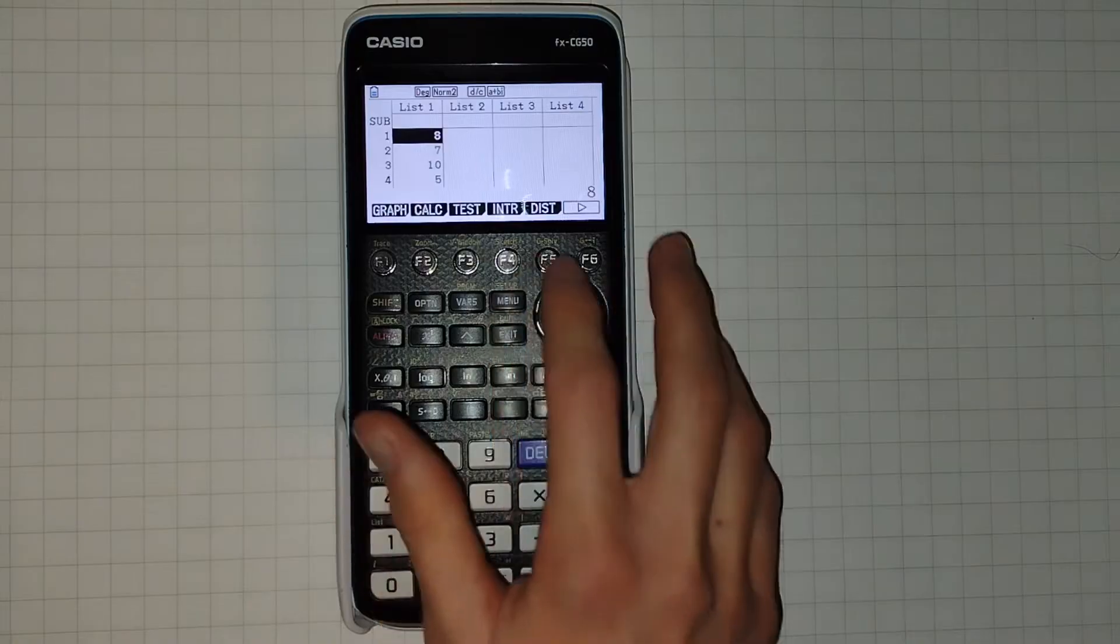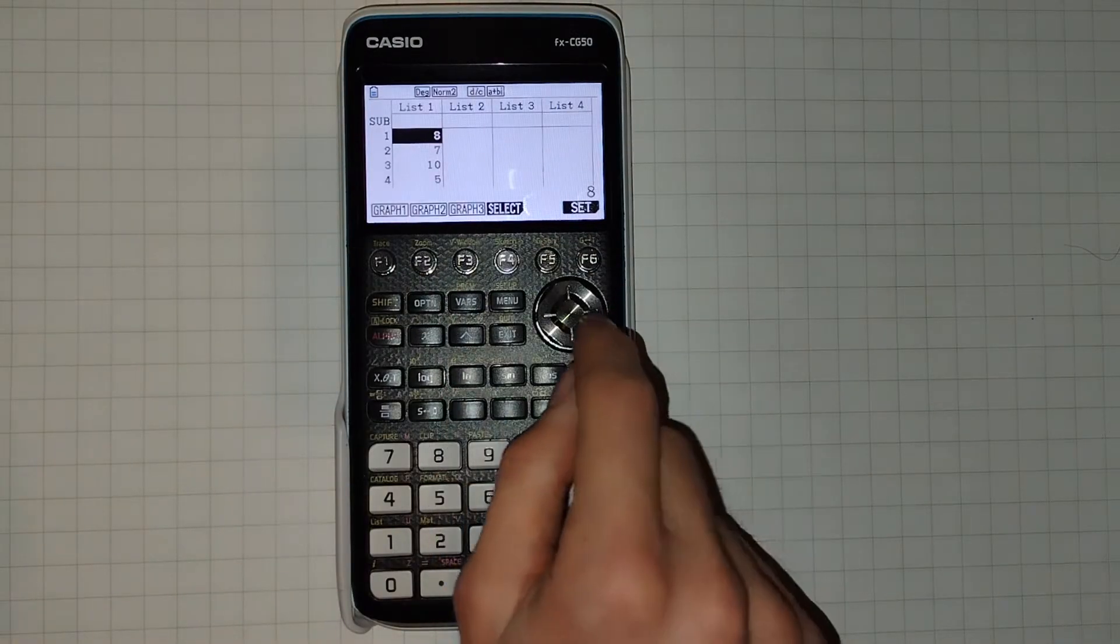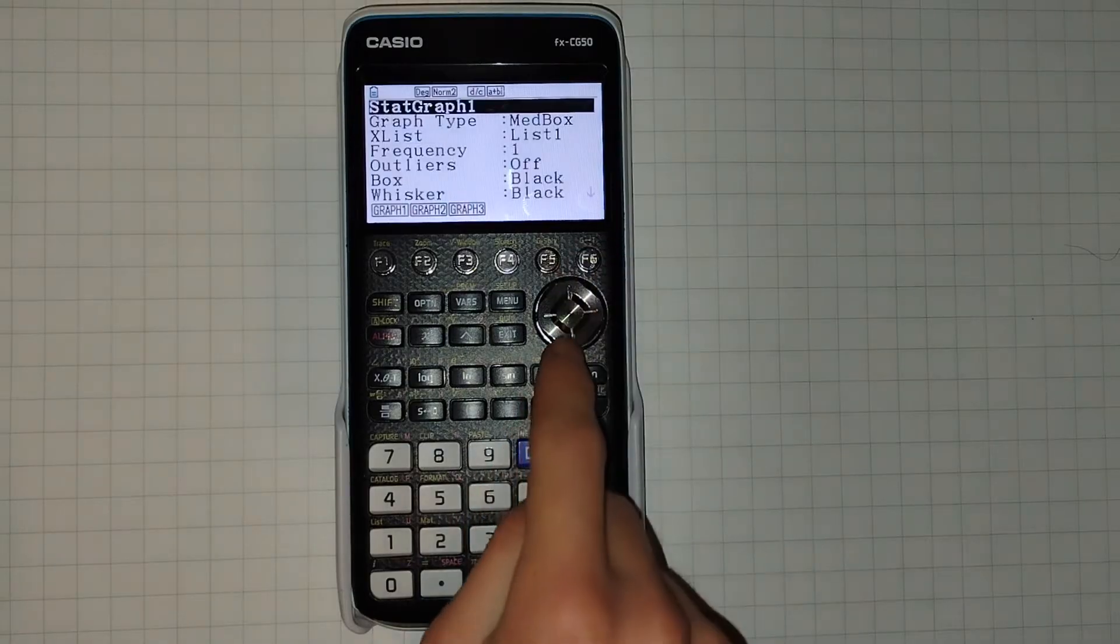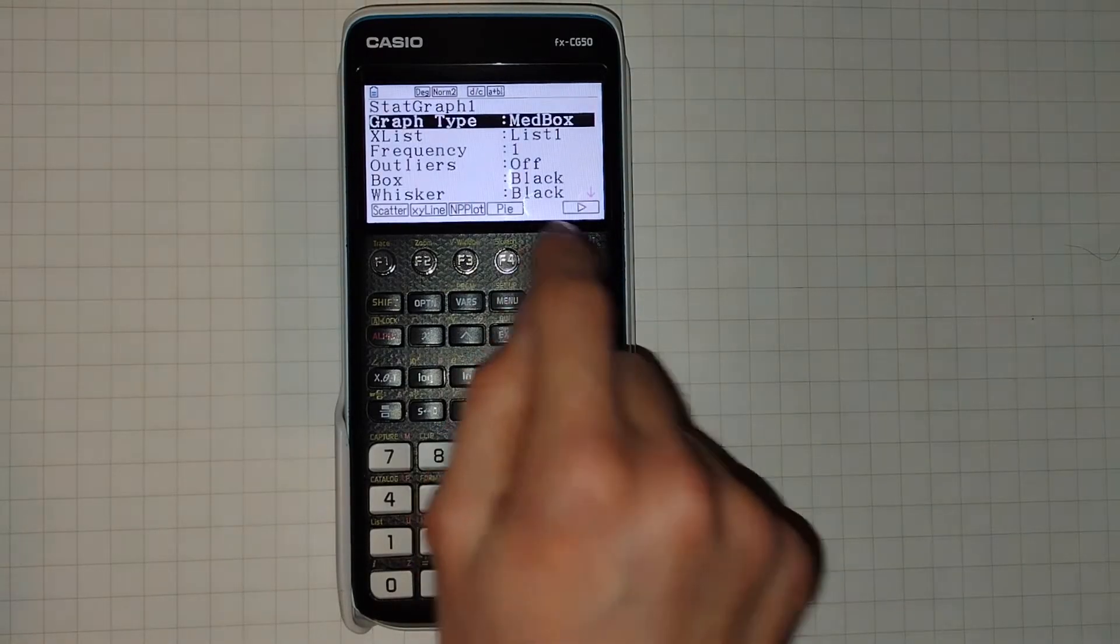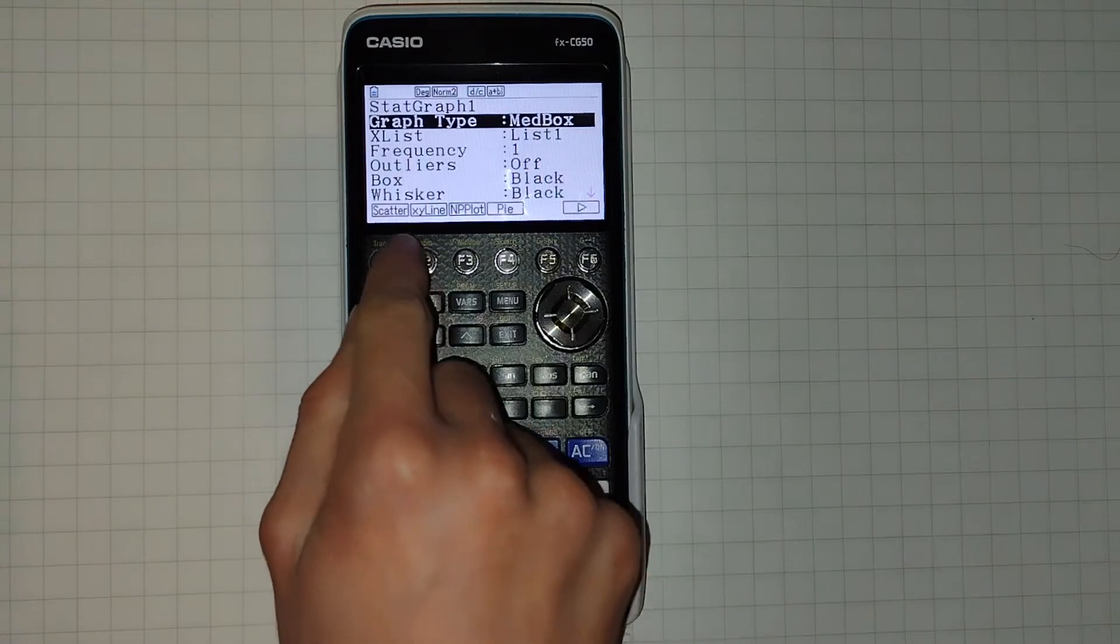Now, you can also click F1 and here you can form some graphs. Click F6 and then scroll down to select what type of graph you want to plot. You can see you can do scatter, XY line,